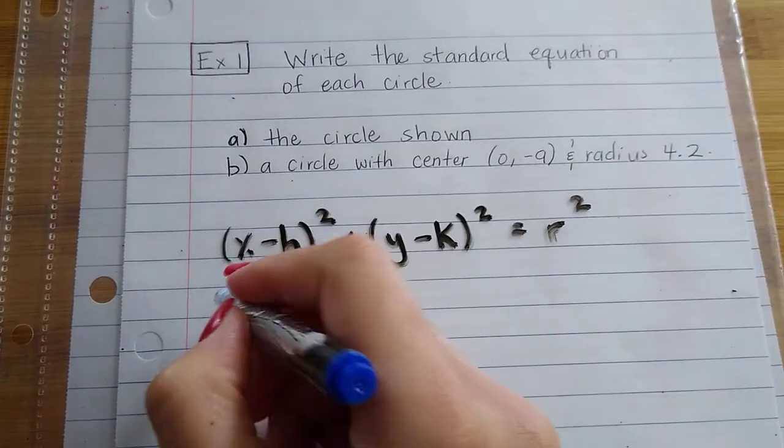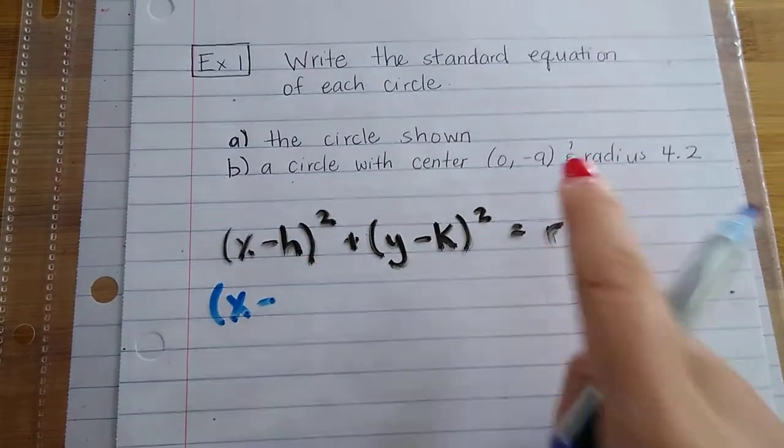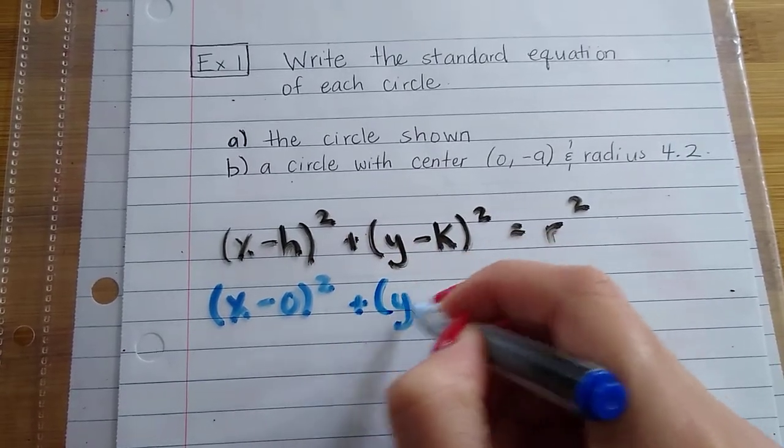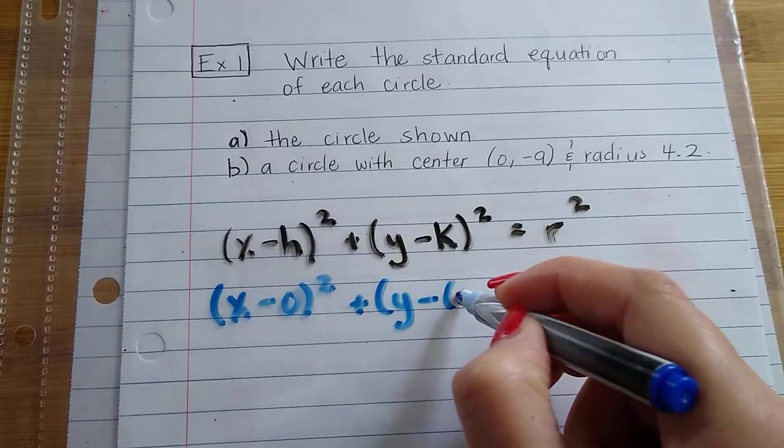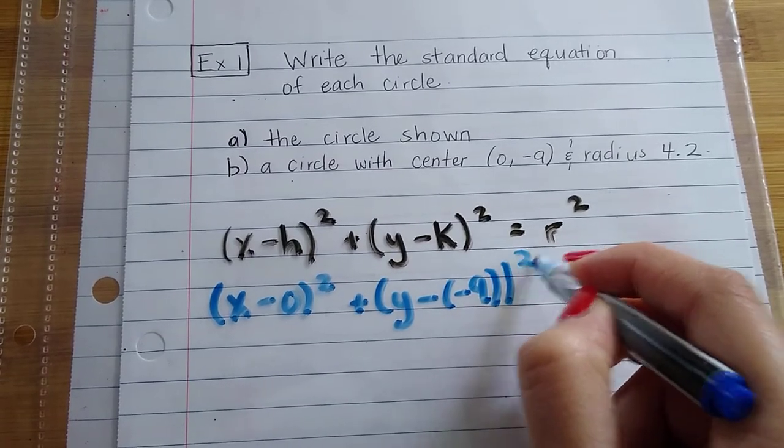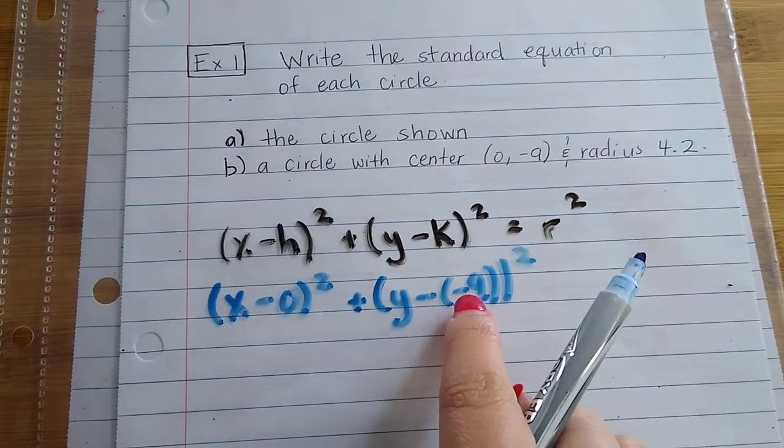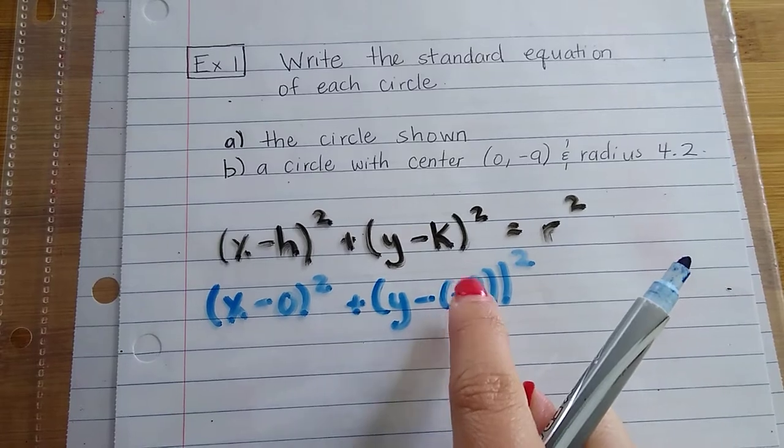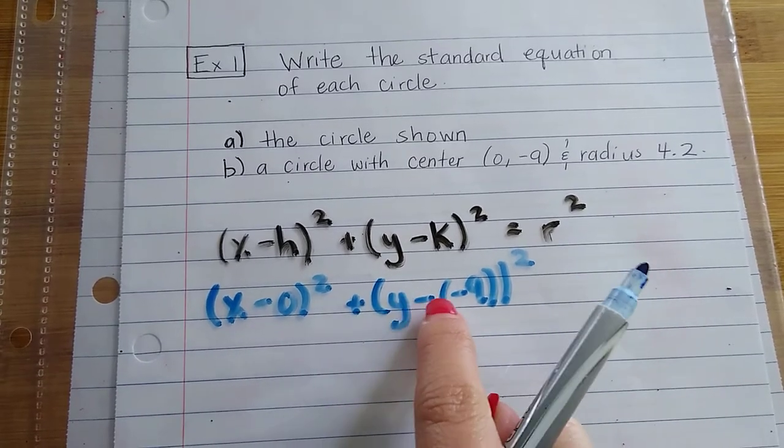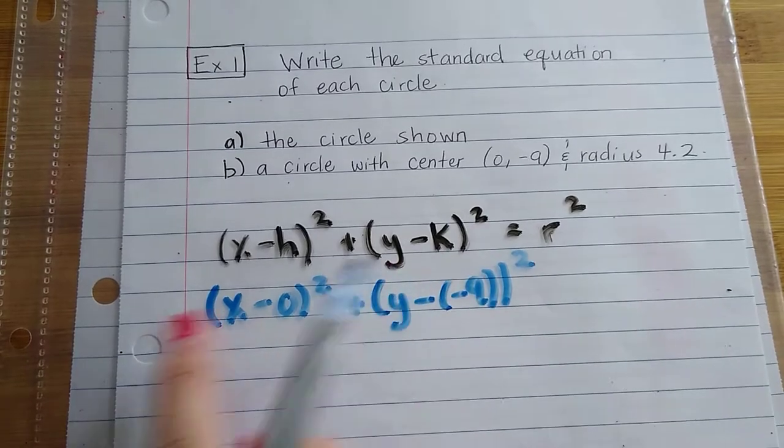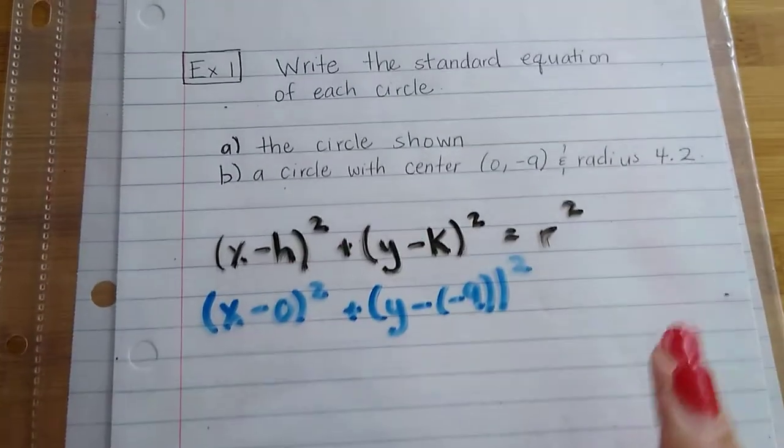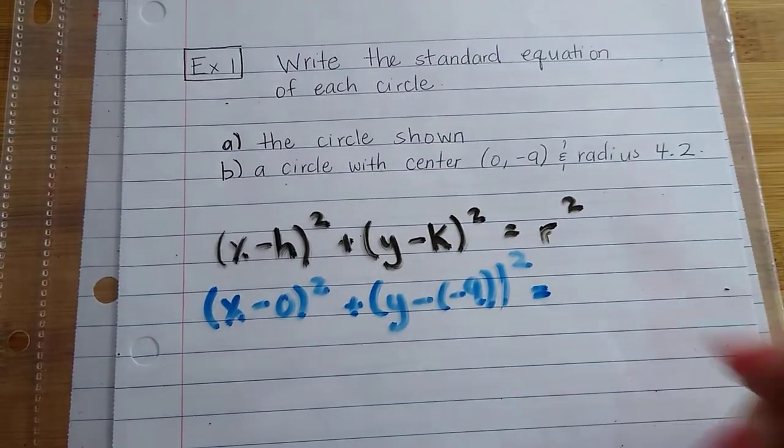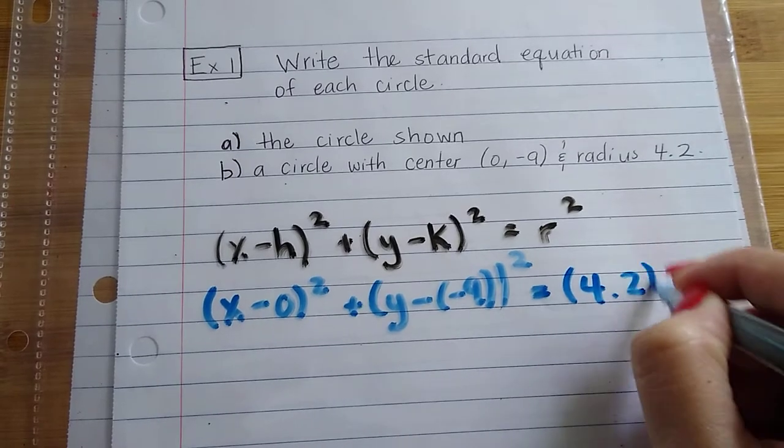Okay, so now again, (x - 0)² + (y - (-9))². Be careful not to forget the negative part here, because if you do, you're going to have (y - 9)², and then that changes everything. That's a whole different standard equation. So make sure you're careful with those negatives here, equals (4.2)².